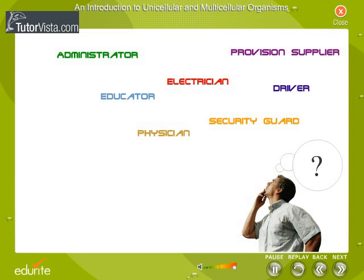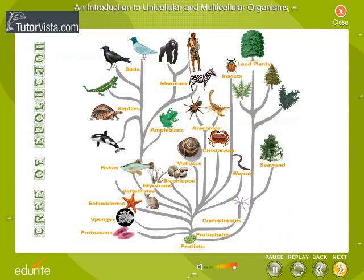So, we have specially trained people to perform different jobs. This is true for living organisms also. To carry out all life activities efficiently, it is necessary to have specialized cells in the body. During the course of evolution, multicellular organisms appeared with specialized groups of cells that performed different functions.